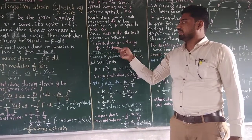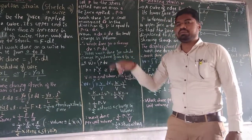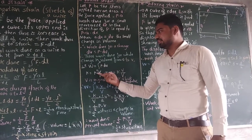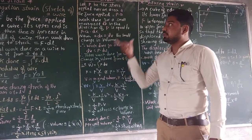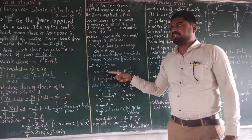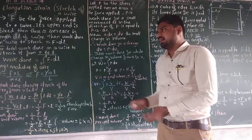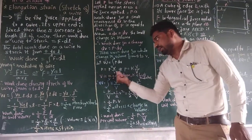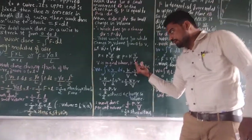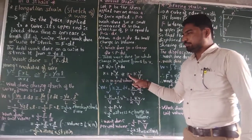Then to find the total work done, integrate: W equals integration from 0 to V of P into dV. You also need to know that the bulk modulus K equals P·capital V / small V, which gives P equals K·small V / capital V. This is the relation between stress, bulk modulus, and strain.